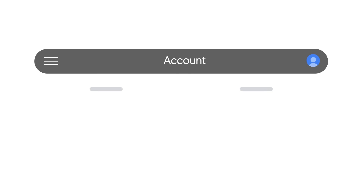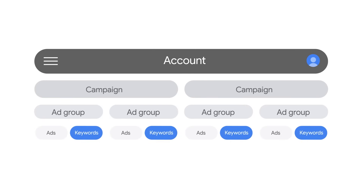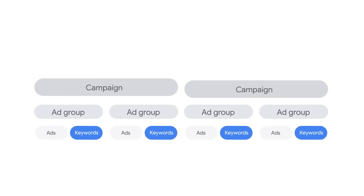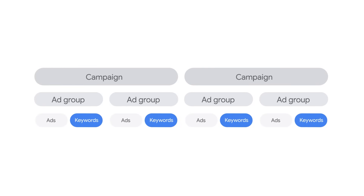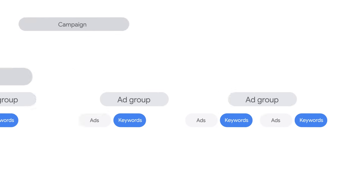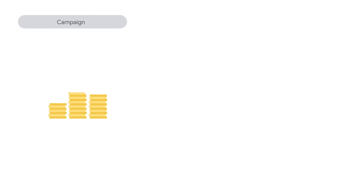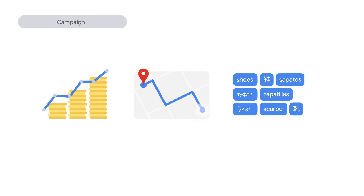Now that you have an understanding of ad group structure, let's review campaigns. Your campaigns are used to organize your ad groups. They give you a manageable picture of how much you spend on each product or service and how they are performing. Settings like daily budget, geographical targeting, and language targeting are set at the campaign level.